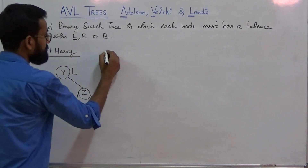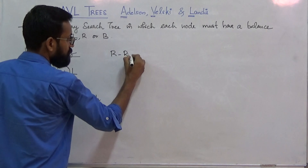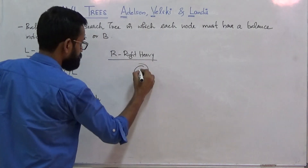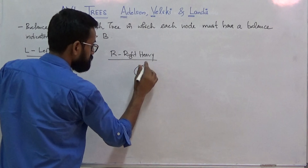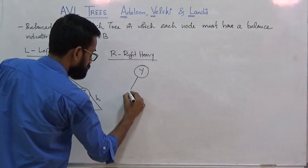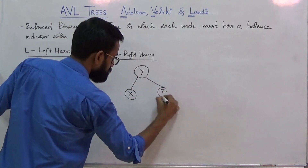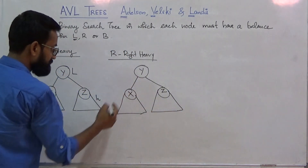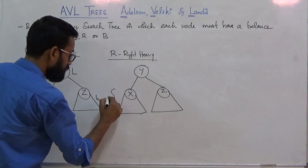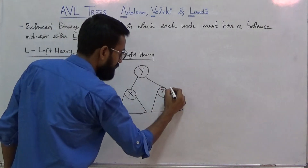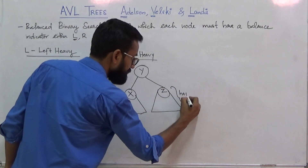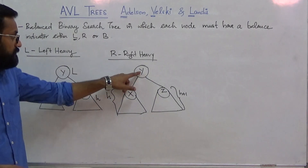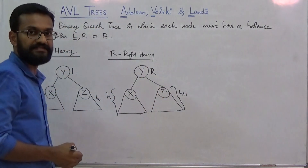Now we can define balance indicator R. R stands for right-heavy. Y is having a left subtree rooted at X whose height is H, and a right subtree rooted at Z whose height is H+1. Since the right subtree is having height 1 greater than that of the left subtree, node Y is said to be right-heavy, and its balance indicator will be R.